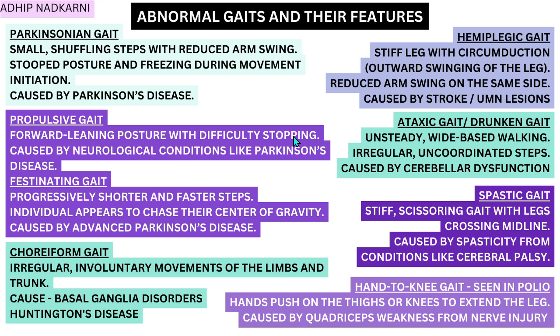Under the neurological types of gaits we have Parkinsonian gait — the propulsive and festinating features which are seen in advanced Parkinson's. Choreoform gait where you see irregular and involuntary movements. Then hemiplegic gait which is one of the most common, where you see circumduction. Ataxic or drunken gait where the cerebellum is affected. Spastic gait where you see scissoring. And hand-to-knee gait which is usually seen in polio. Now let's go over these gaits and see what features each one has.